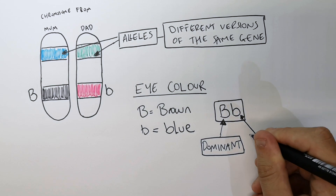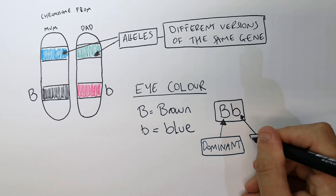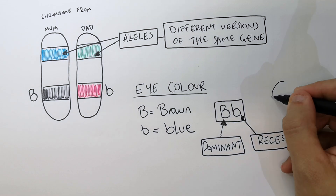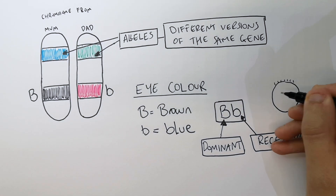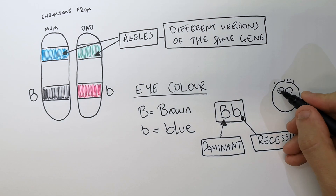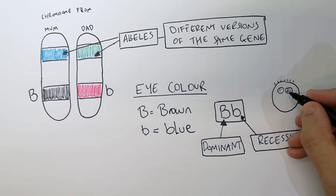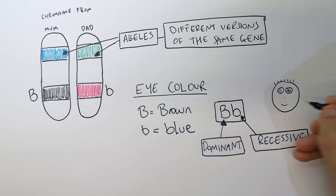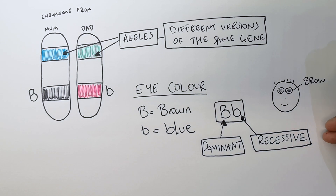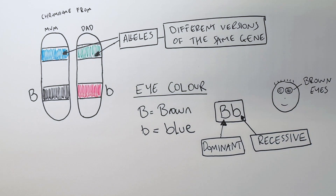The big B is dominant and the little B is what we call recessive — the little letter is recessive. That means this person has got the big B gene, which will give them brown eyes, because the dominant gene will always be expressed over the recessive.